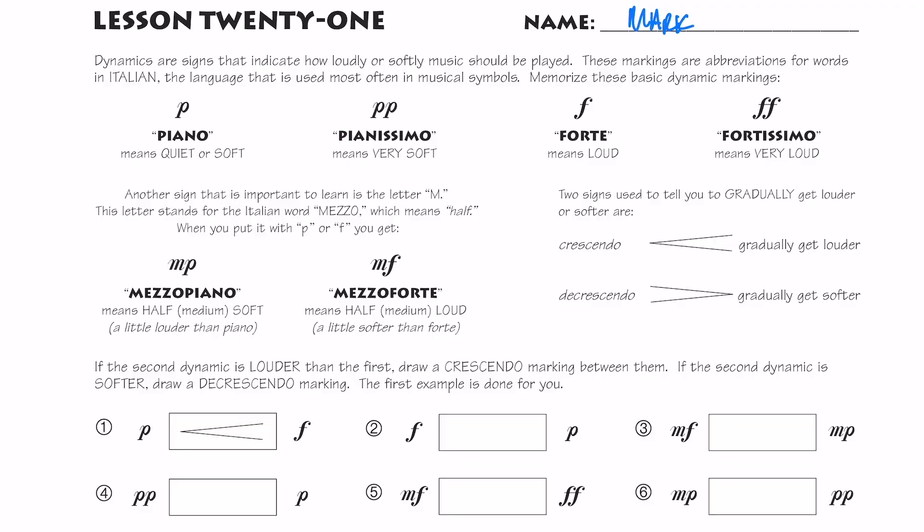So let's start off at the top of the page by writing our name at the top. The very first thing that you're going to learn is the different dynamic markings that you're going to see in music. Dynamics means how loud or soft relatively that you play. When I play piano, that means I'm going to play quiet or soft. Piano is marked with a P.